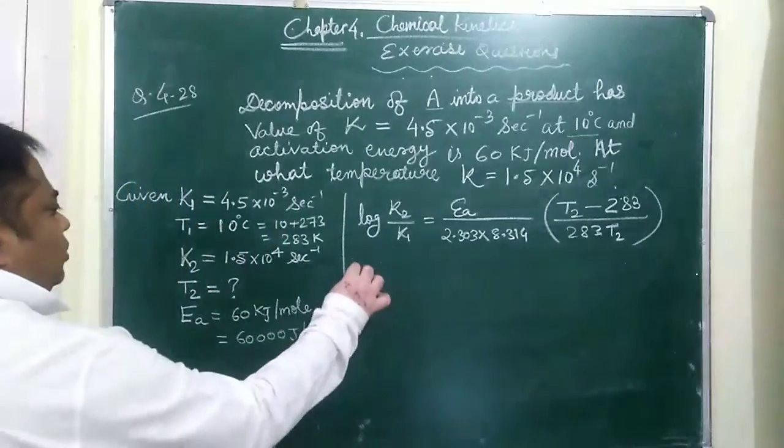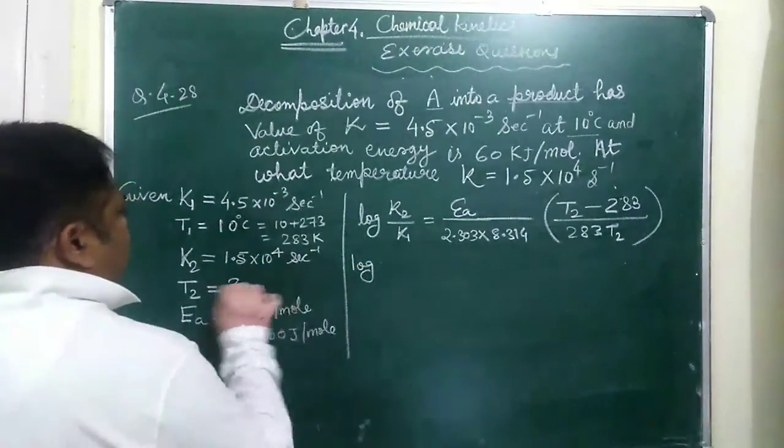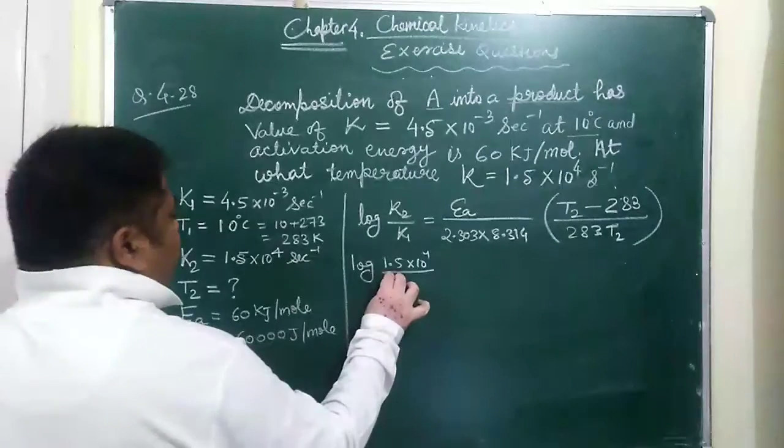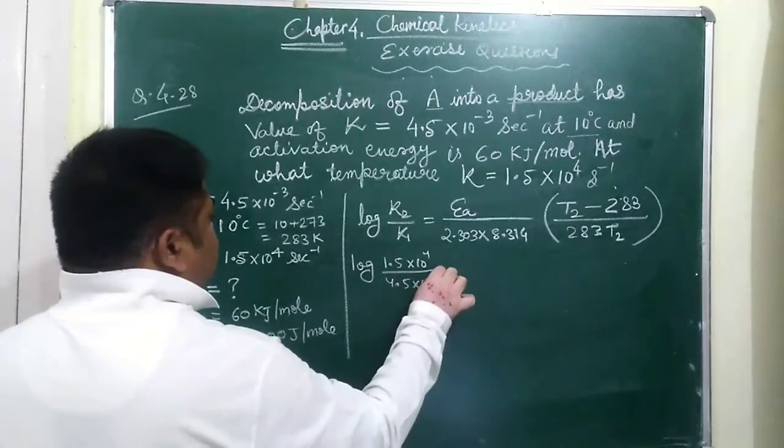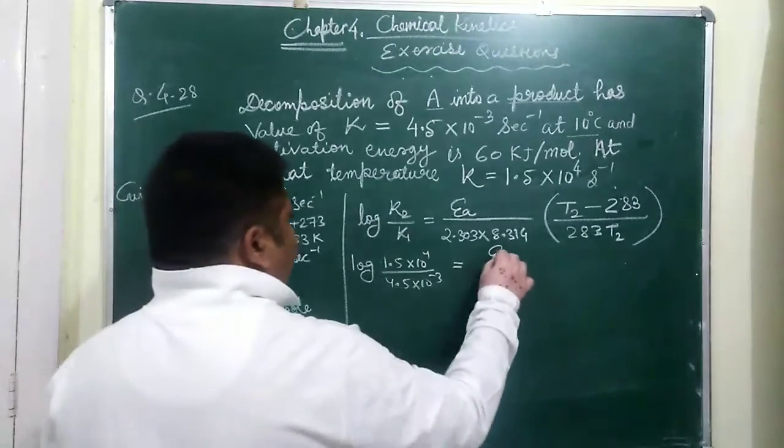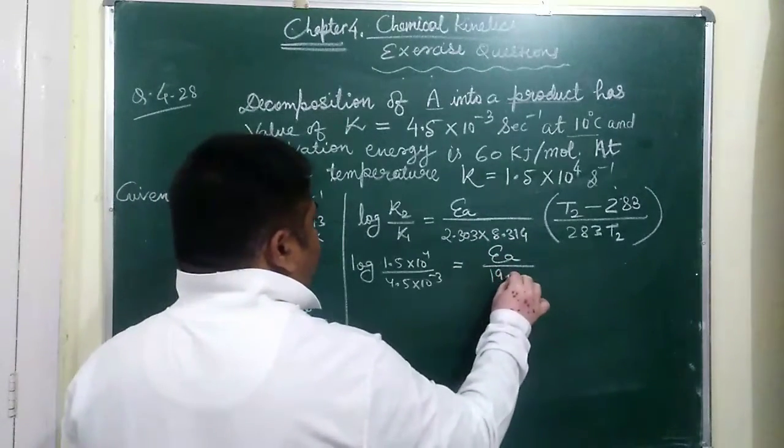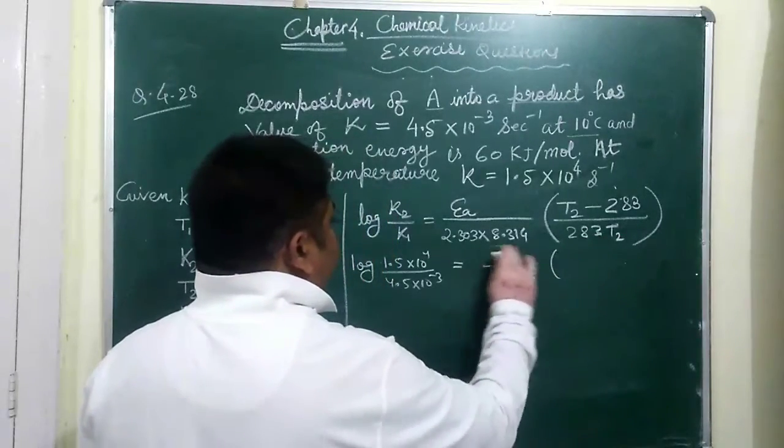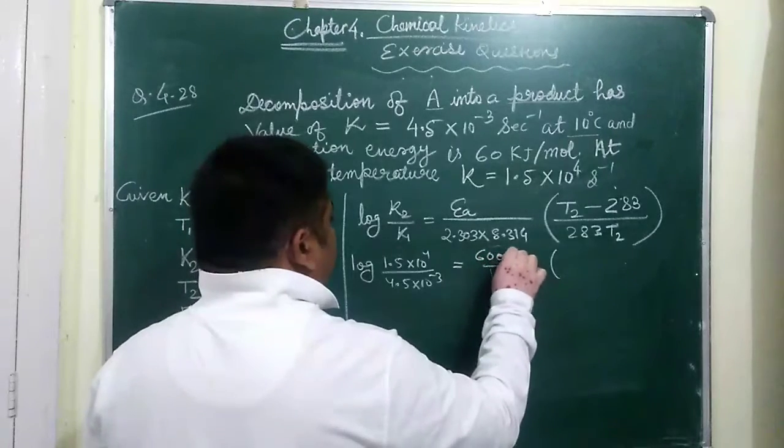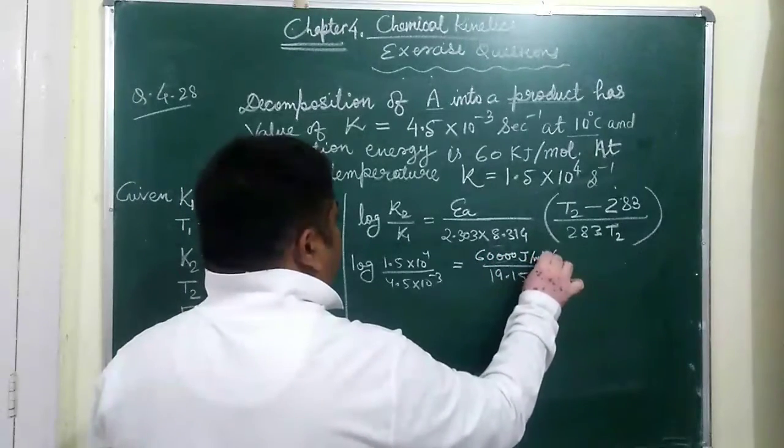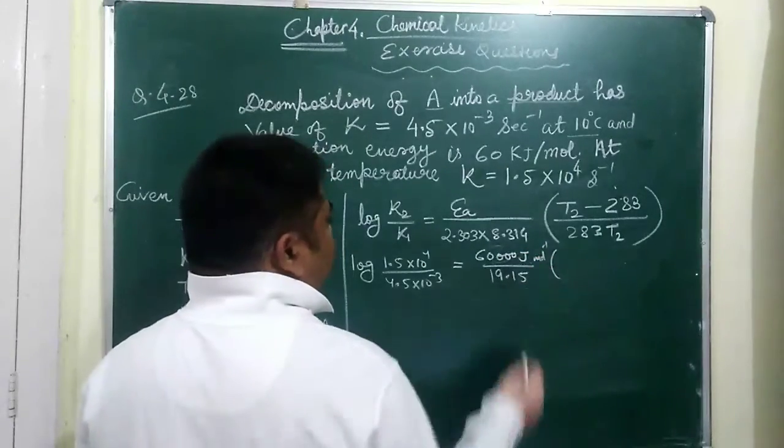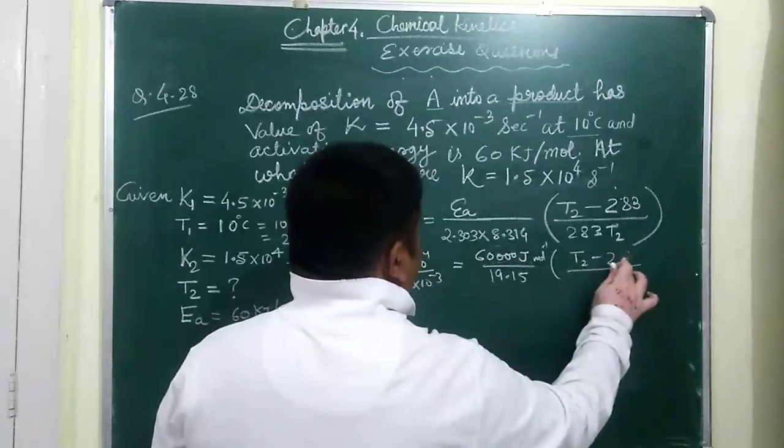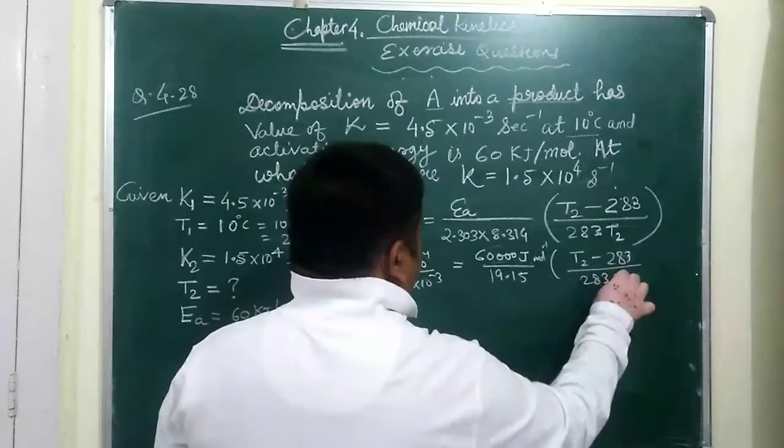So log K2 value is 1.5 times 10 to the power 4 divided by 4.5 times 10 to the power minus 3 is equal to Ea by 2.303R and this value we have to find out. Ea is also given here, 60,000 joule per mole. So T2 minus 283 by 283 into T2.